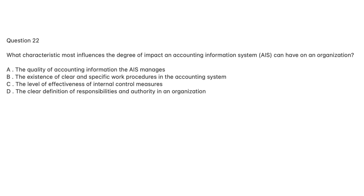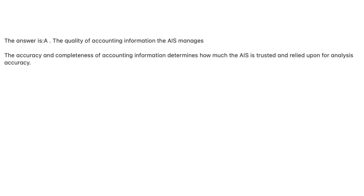Question 22. What characteristic most influences the degree of impact an accounting information system, AIS, can have on an organization? A. The quality of accounting information the AIS manages. B. The existence of clear and specific work procedures in the accounting system. C. The level of effectiveness of internal control measures. D. The clear definition of responsibilities and authority in an organization. The answer is A. The accuracy and completeness of accounting information determines how much the AIS is trusted and relied upon for analysis accuracy.